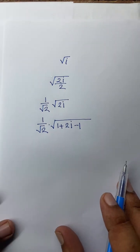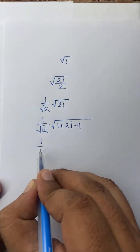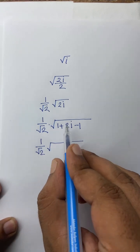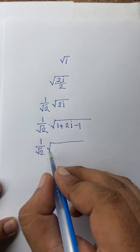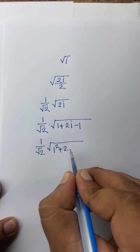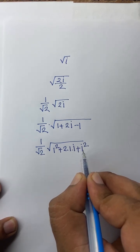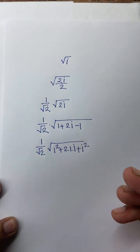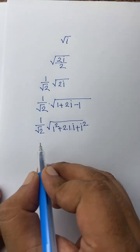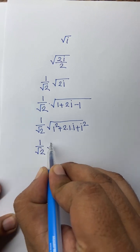Then I can say it will be 1 over square root 2 times square root of (1 plus 2i minus 1). It will be 1 squared plus 2 times 1 times i plus i squared. We know that i squared equals minus 1.